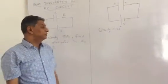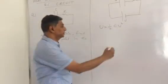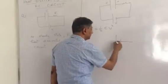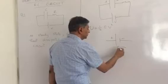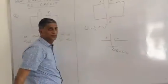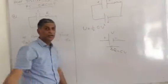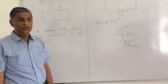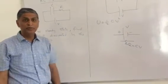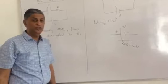Now at the same time, charge flown through the battery, delta Q, is equal to CV. And potential difference across the battery is V. It means heat supplied by the battery is delta Q into V.